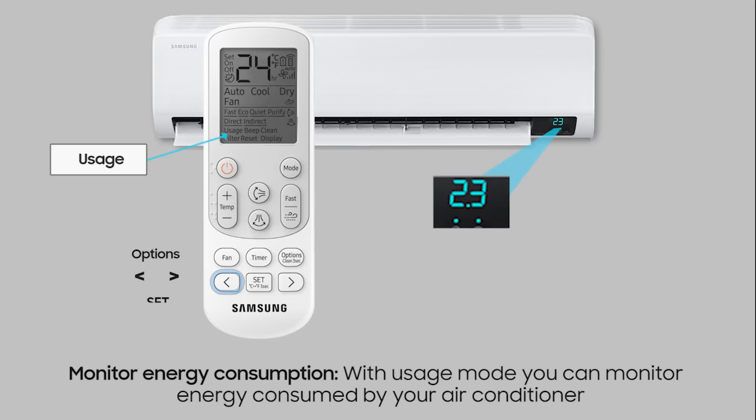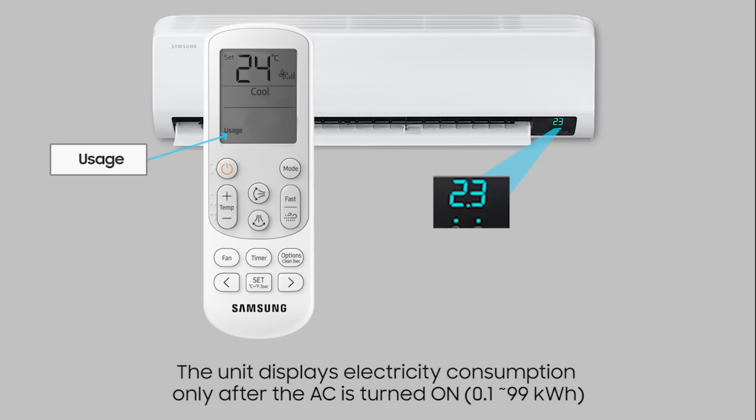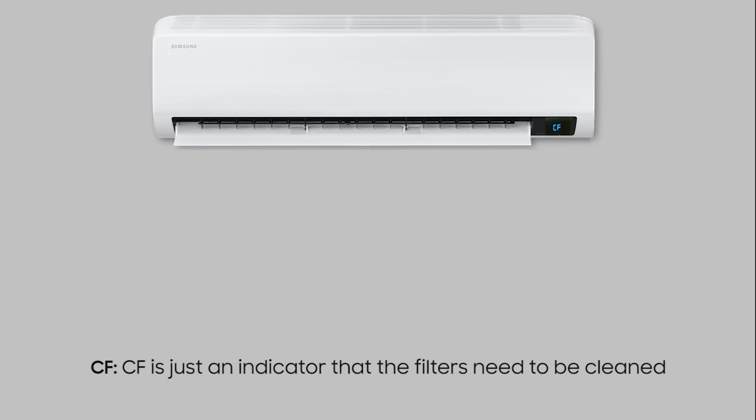Monitor energy consumption: with usage mode, you can monitor the energy consumed by your air conditioner. The unit displays electricity consumption only after the AC is turned on.